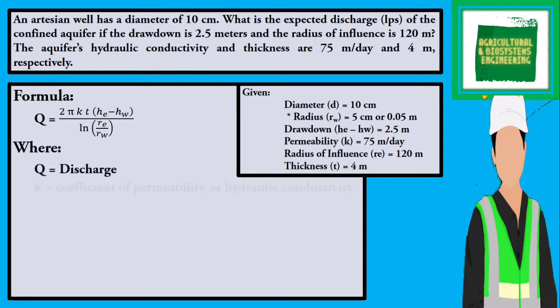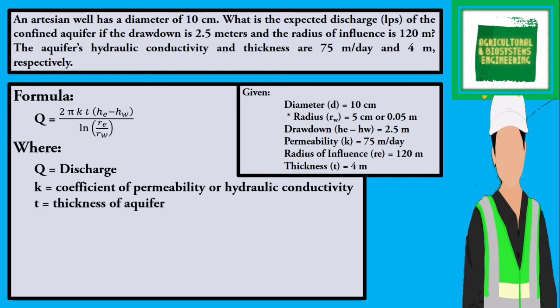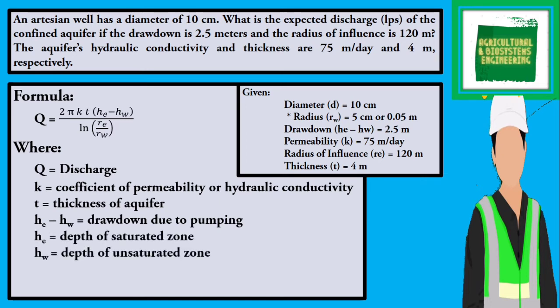Where Q is the discharge, k is the coefficient of permeability or hydraulic conductivity, t is the thickness of aquifer, He minus Hw is the drawdown due to pumping, Hs is the depth of saturation zone, Hw is the depth of unsaturated zone, Re is the radius of influence of well, and Rw is the radius of well at water surface.